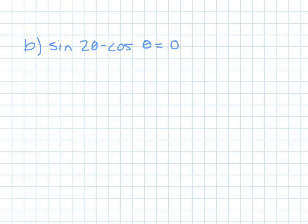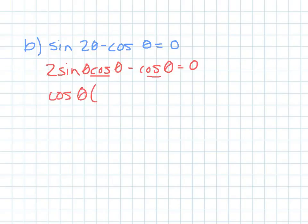Moving on to the next one. I have sine of 2θ minus cosθ equals 0. The 2θ suggests a double angle identity — the double angle formula for sine of 2θ is 2sinθcosθ. Substituting that in, notice both terms have a cosθ in common. So I factor out cosθ, leaving cosθ times (2sinθ minus 1) equals 0.